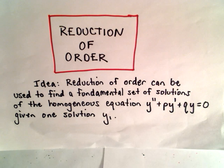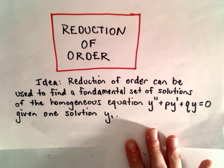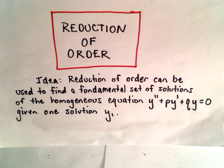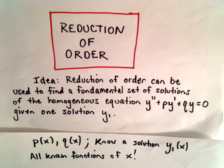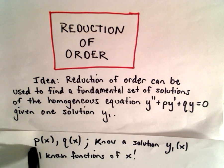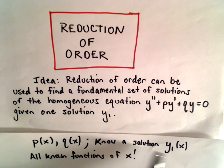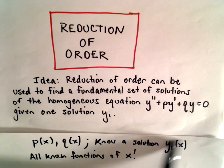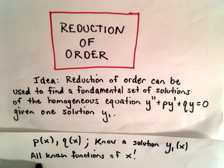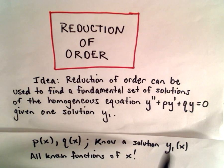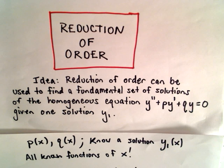A couple of things I want to emphasize here. In this video I'm not going to actually do any concrete examples — just consider this a proof or a justification that says we are in fact allowed to do this. Just a little notation: p, q, and y — again, p of x and q of x — those are just going to be functions of x. And likewise, we know a solution y sub one, just to emphasize that it's also a function of x. These are all known functions of x, but when I do my notation I'm just going to use p, q, and y sub one without the x's.